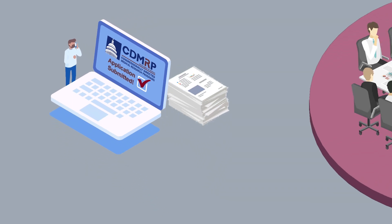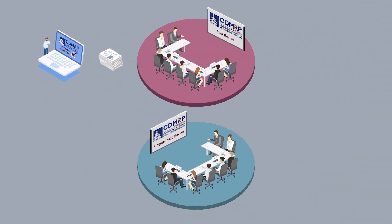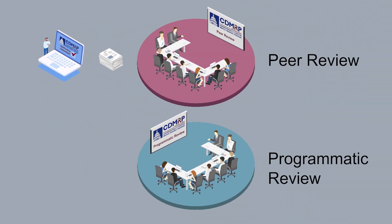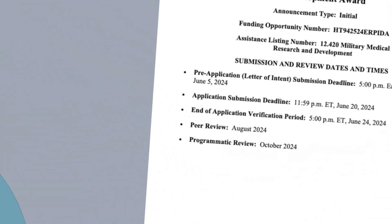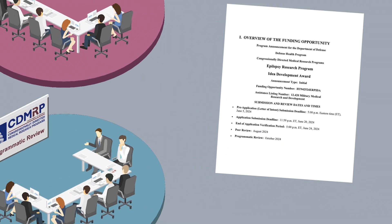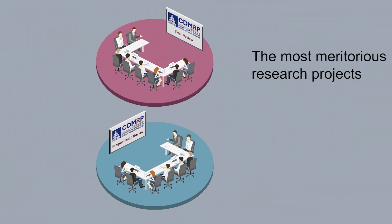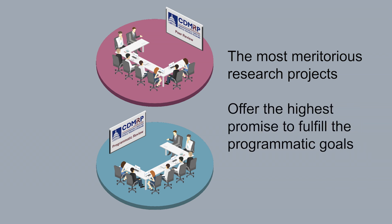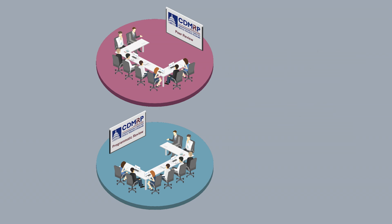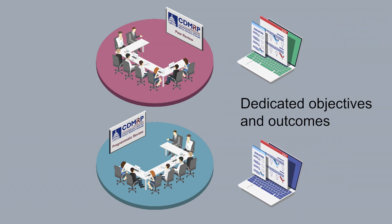The application you submitted will undergo a two-tier review process consisting of peer and programmatic reviews. Research programs publish approximate dates for the peer and programmatic reviews on the first page of all funding opportunities. Our two-tier review process balances funding the most meritorious research projects with projects that also offer the highest promise to fulfill the programmatic goals described in each funding opportunity. Each step of the review process involves dedicated objectives and outcomes so that the two tiers are complementary, not redundant.